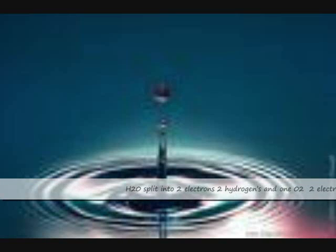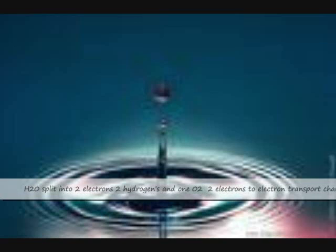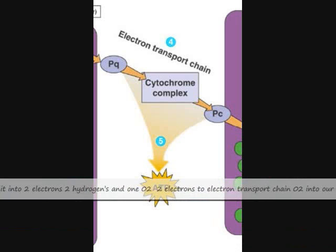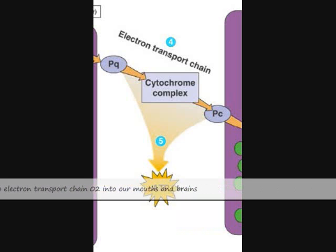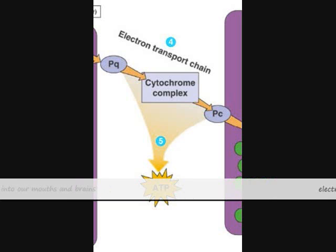And that's a fact. H2O splits into two electrons, two hydrogens, and one O2. Two electrons, two electron transport chains, two O2 into our mouths and brains.